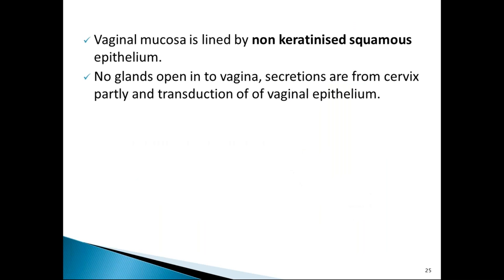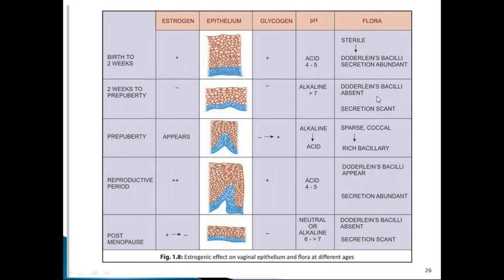The vaginal mucosa is lined by non-keratinized squamous epithelium. There are no glands in the vagina; secretions come mostly from the cervix or by transudation from the vaginal epithelium. Vaginal secretions give us information about hormonal status.